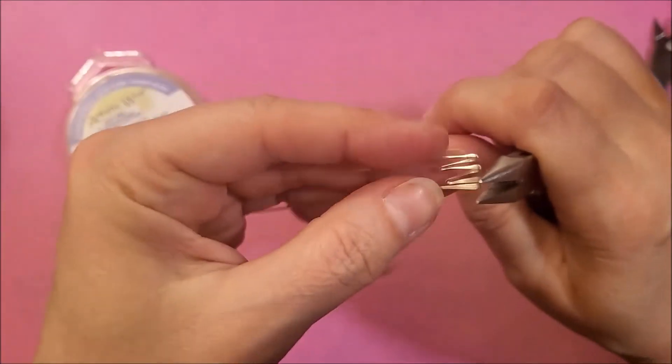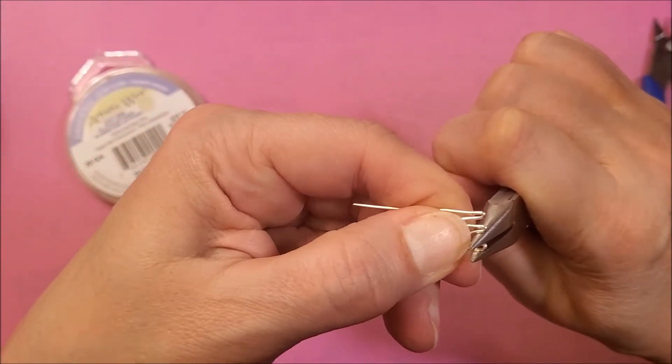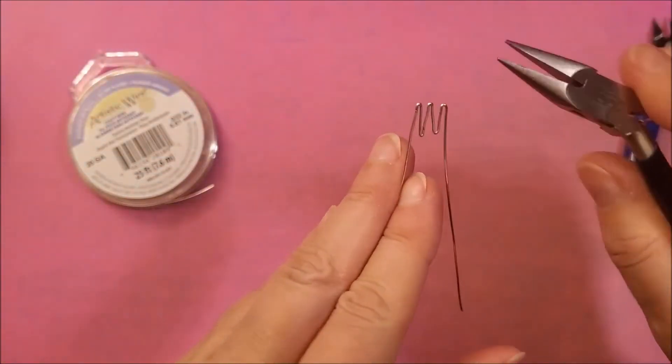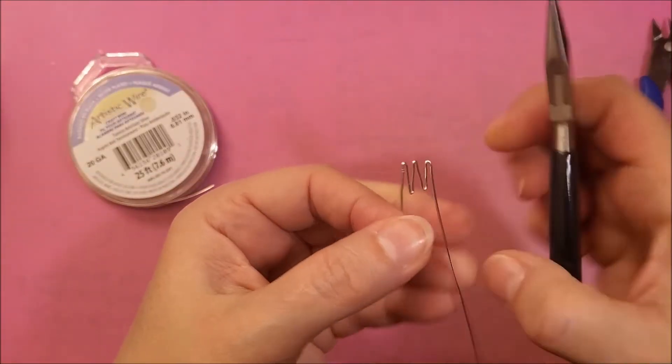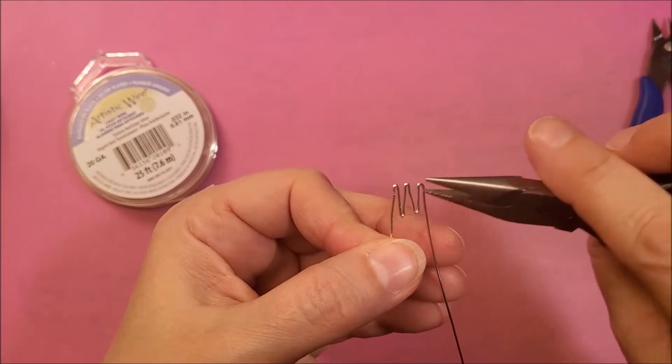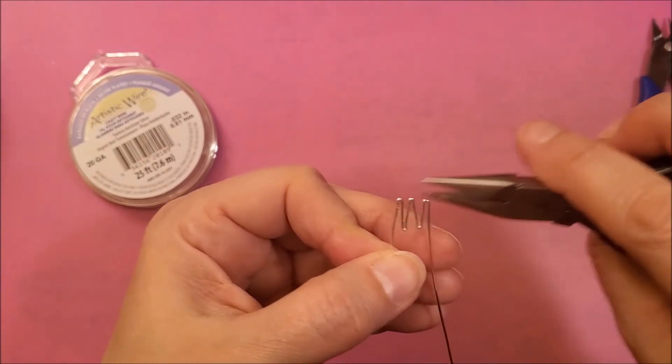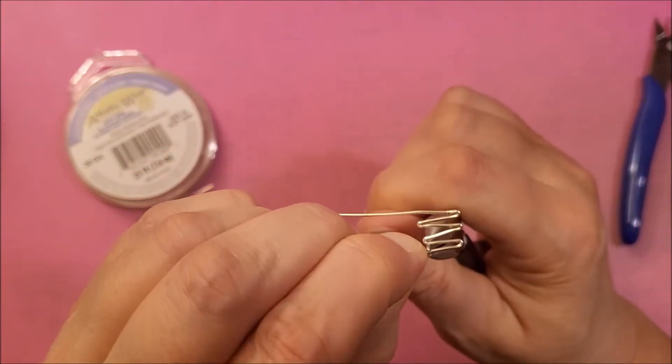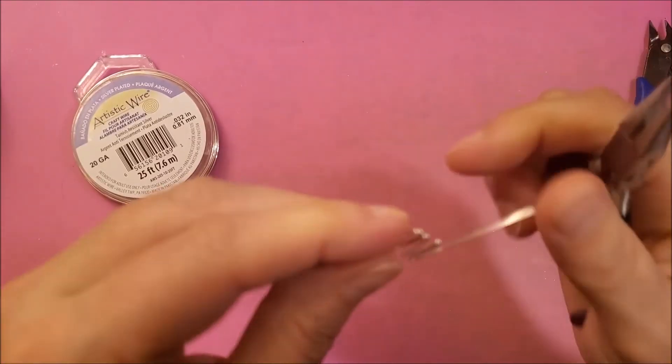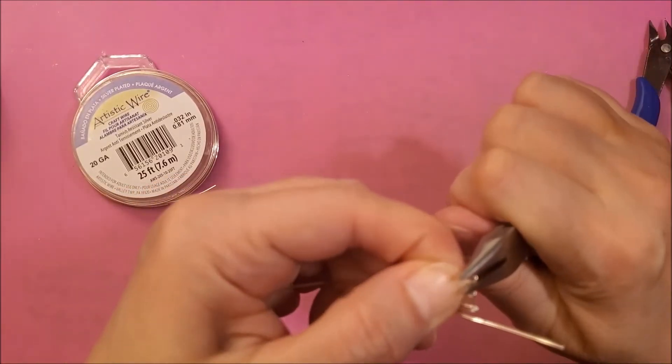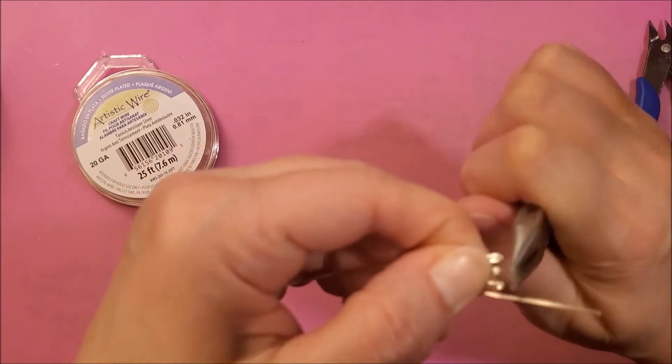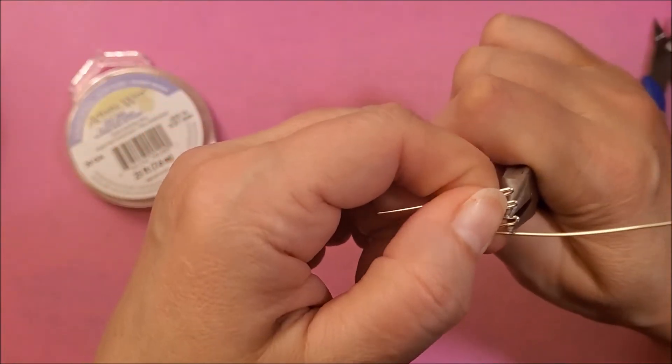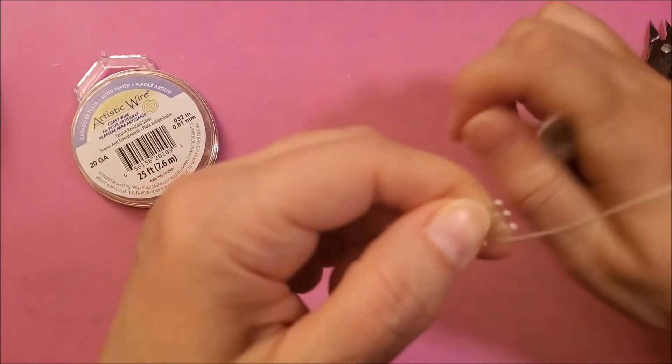Open it up a little bit, make sure your pliers are where the bend should be so they're all exactly the same size and then just bend it over. You could also do like a wire weave in each paddle if you'd like.